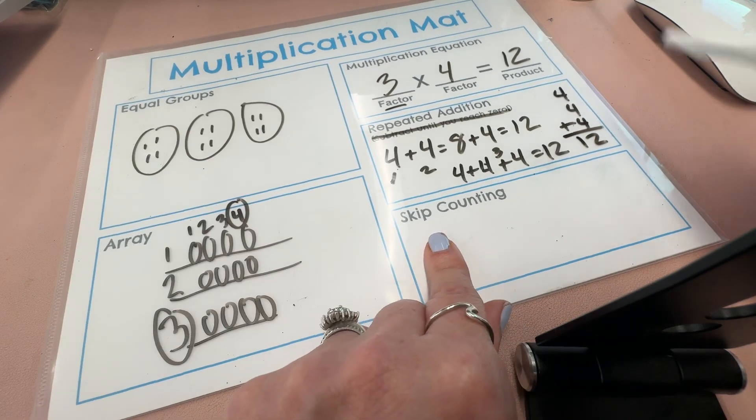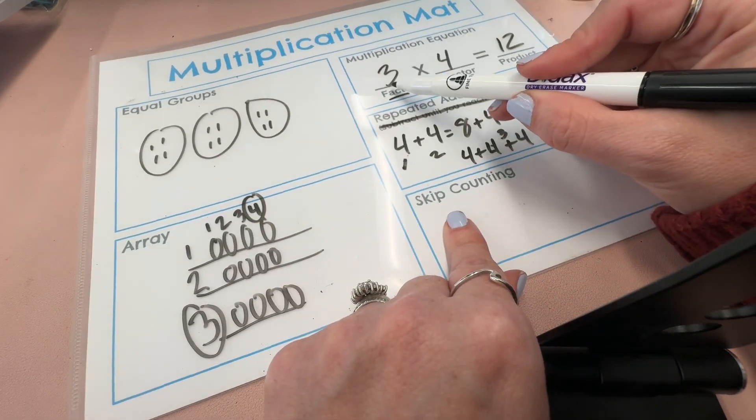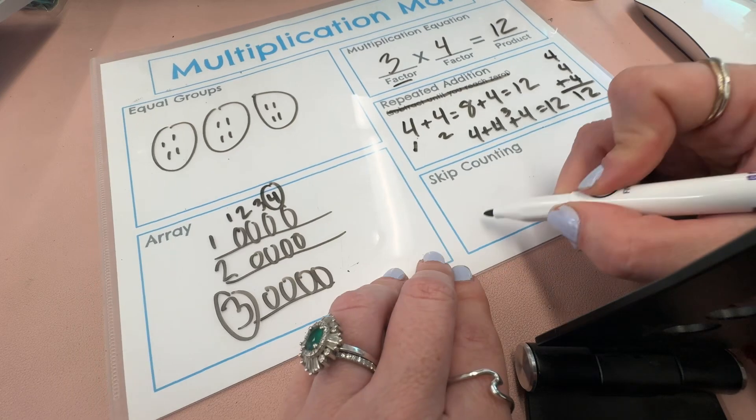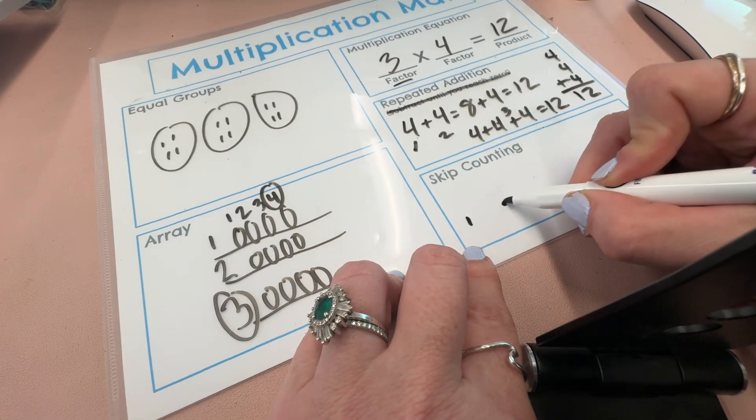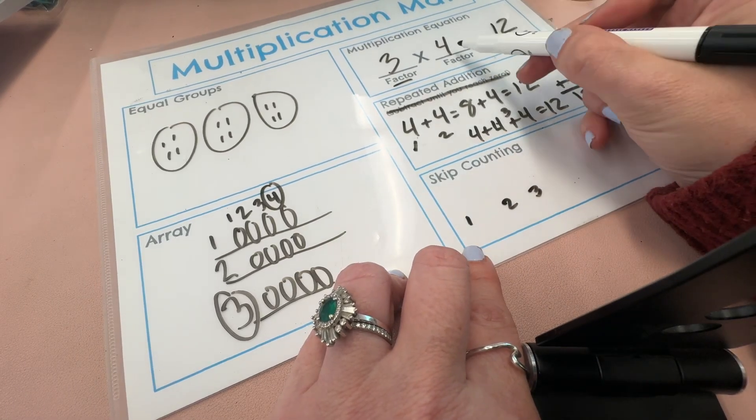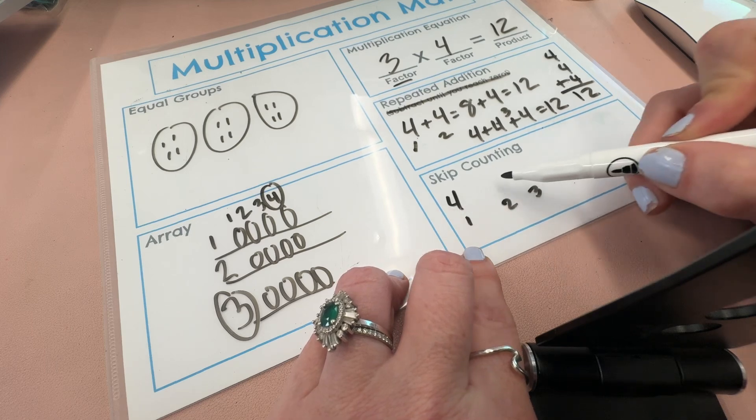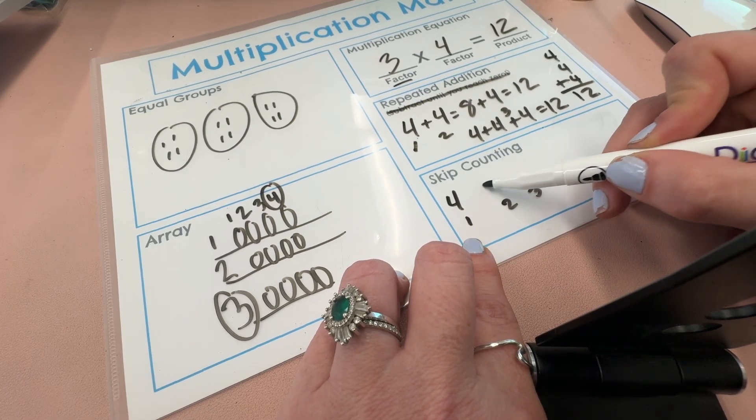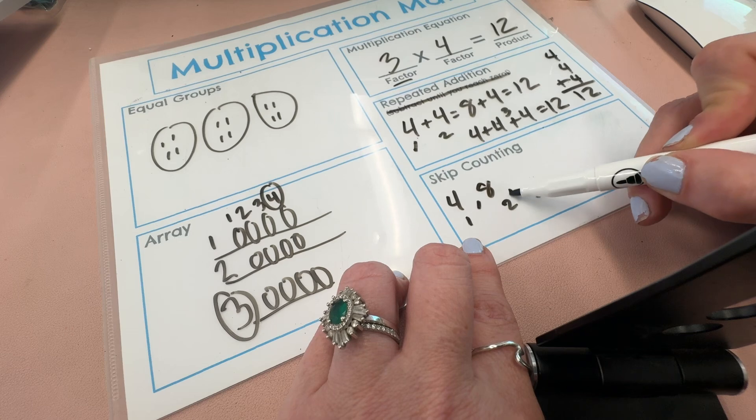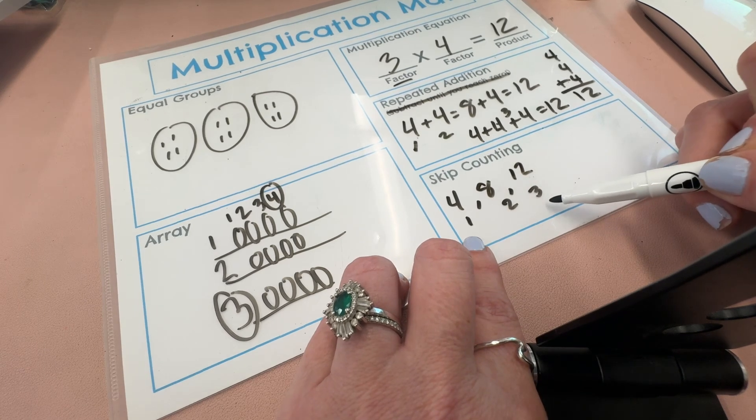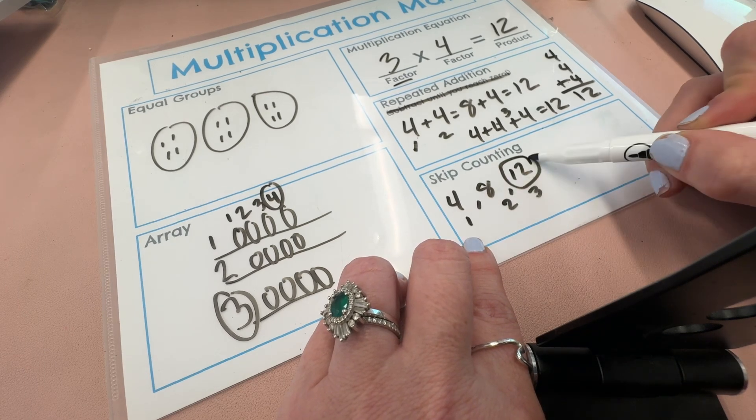Another way we do it is by skip counting. So you would count up three fours. So I know I'm going to count three. One, two, three. And I'm going to count by fours. So it's four. The next four, I add up four more, is eight. The next four would be twelve. And I counted three fours. So the answer is twelve.